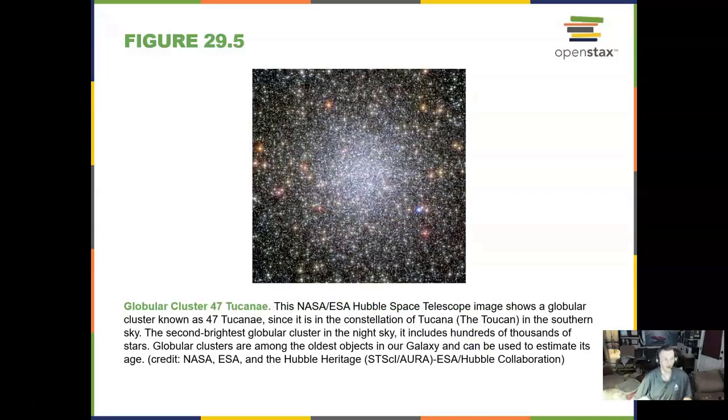Beautiful globular cluster, 47 Tucanae. This is neat. Here we see the European Extremely Large Telescope, the European Very Large Telescope, as compared to the Colosseum. Wow, they're huge.